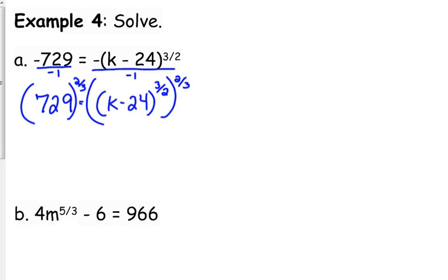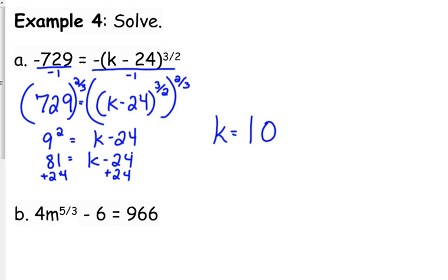The cube root of 729 is 9, and then 9 squared. So add 24, k equals 105.